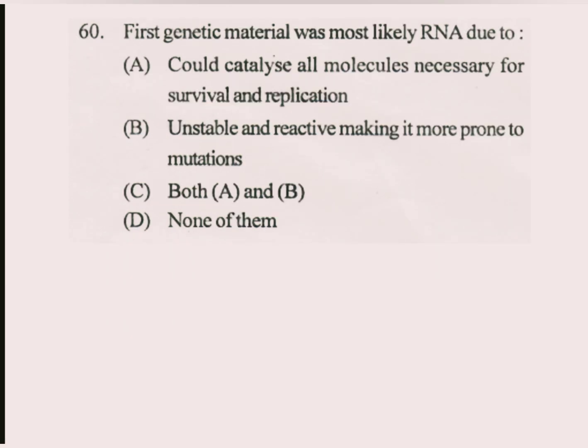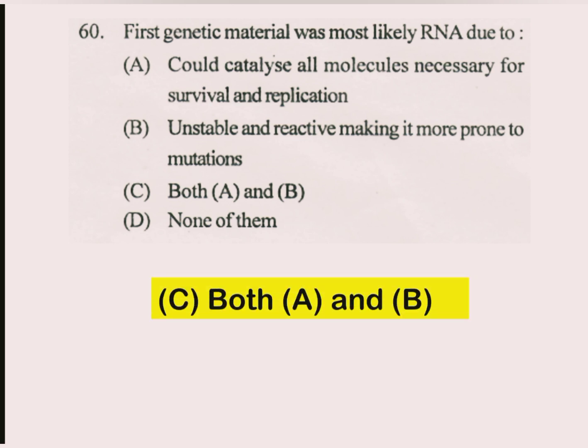Question number 60. First genetic material was most likely RNA due to? The answer is C part: both A and B. That's all for today. Thanks for watching.